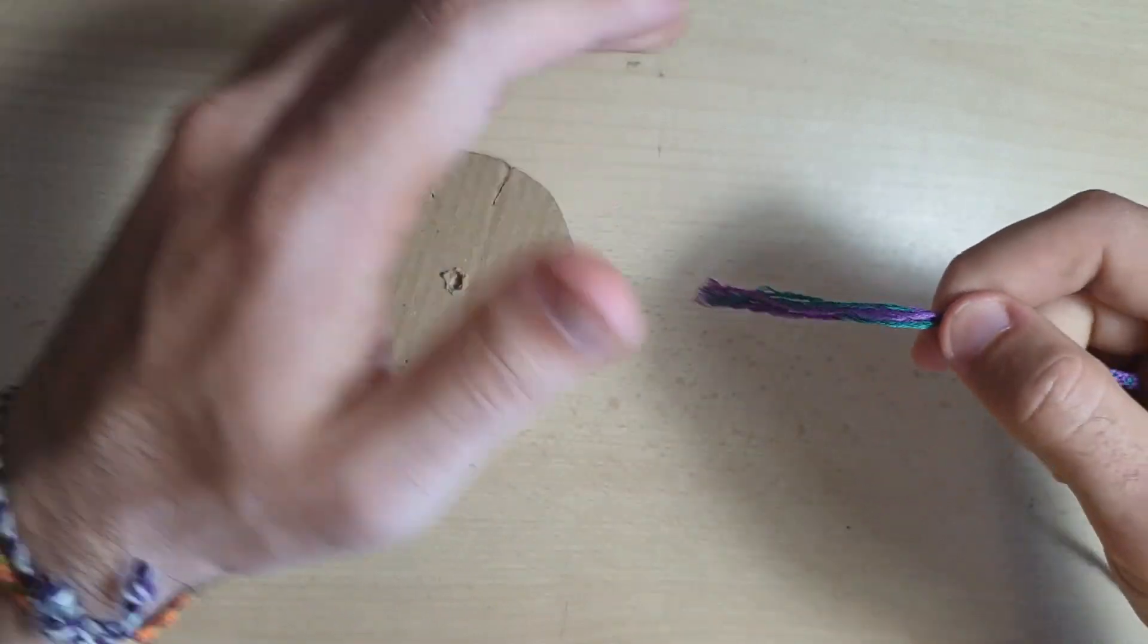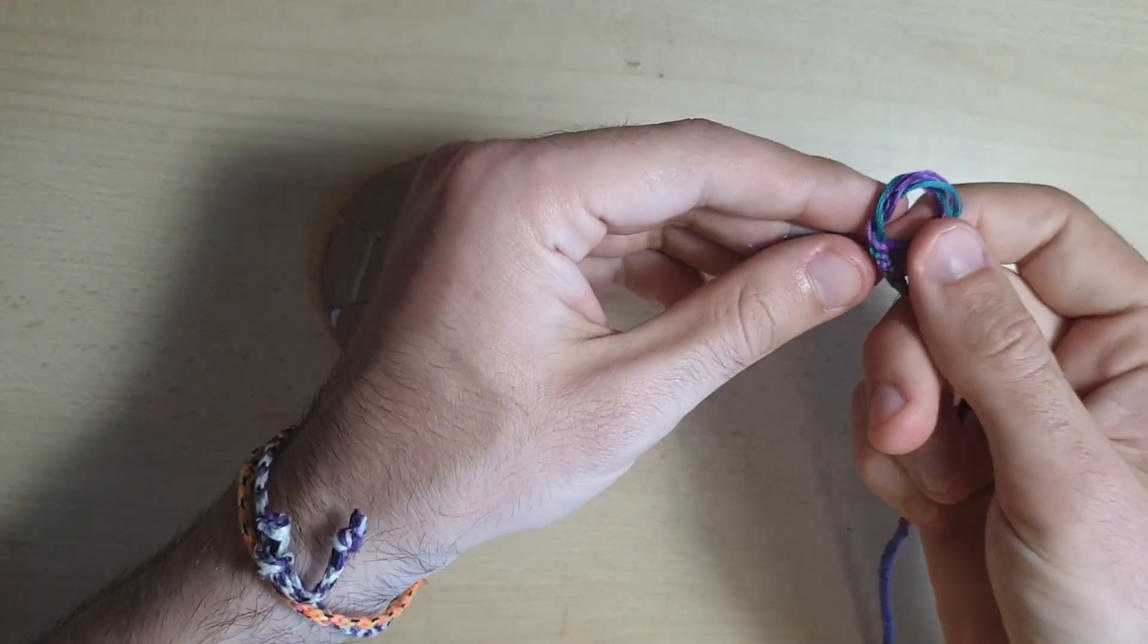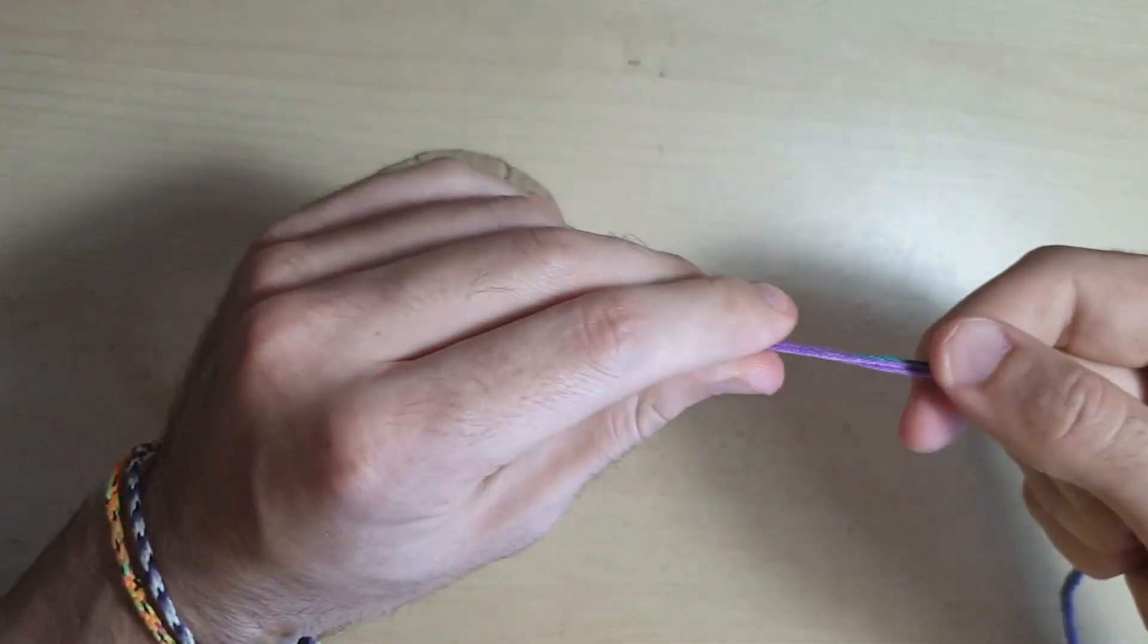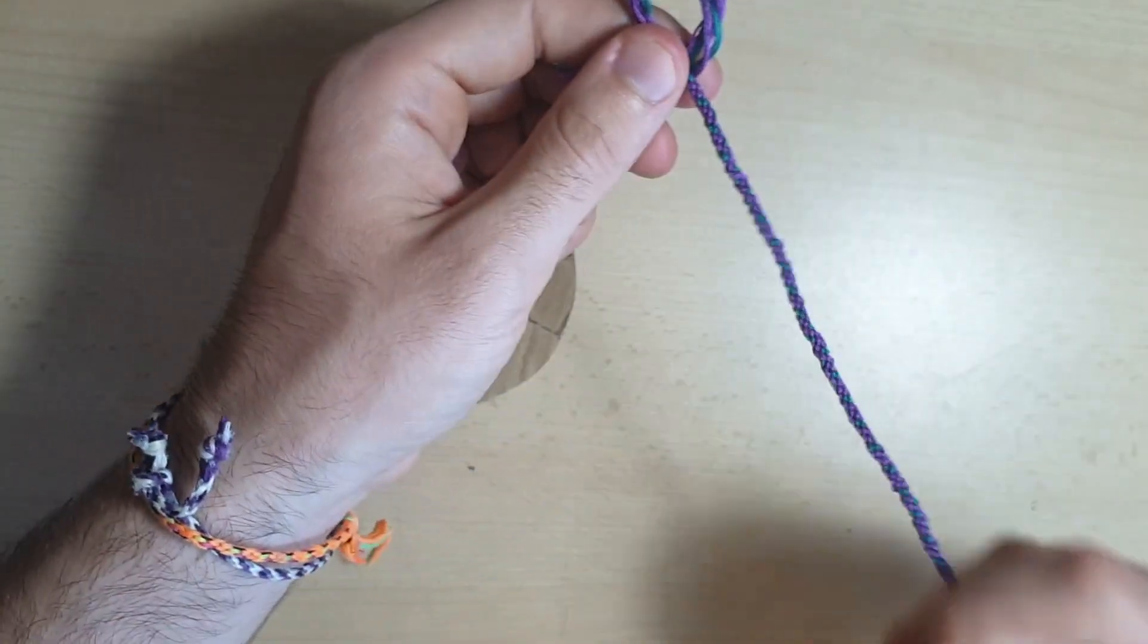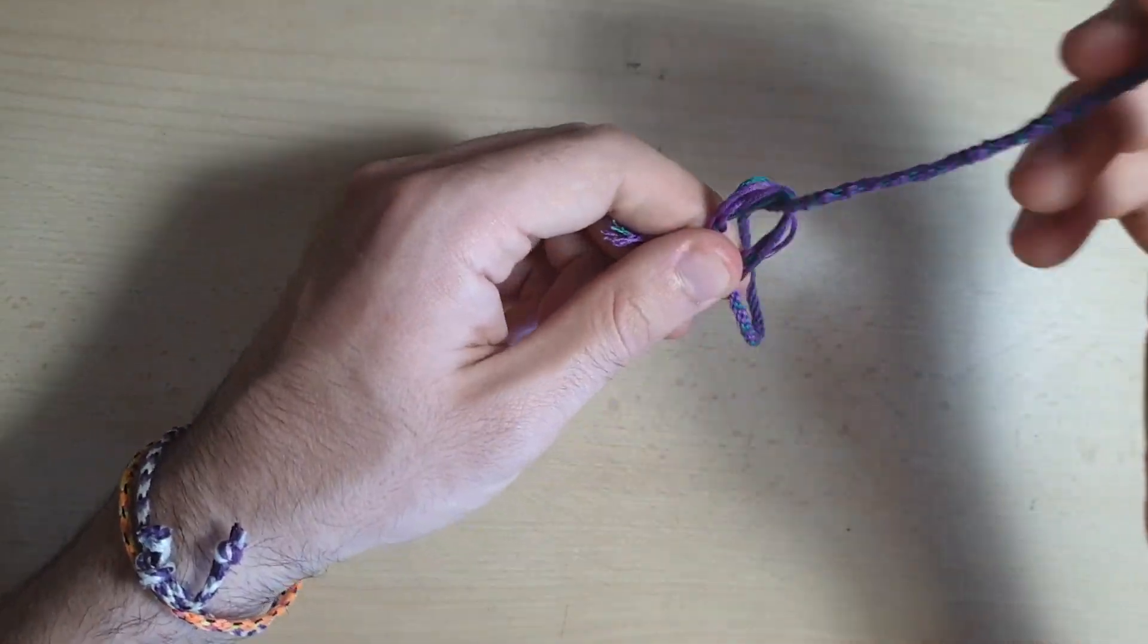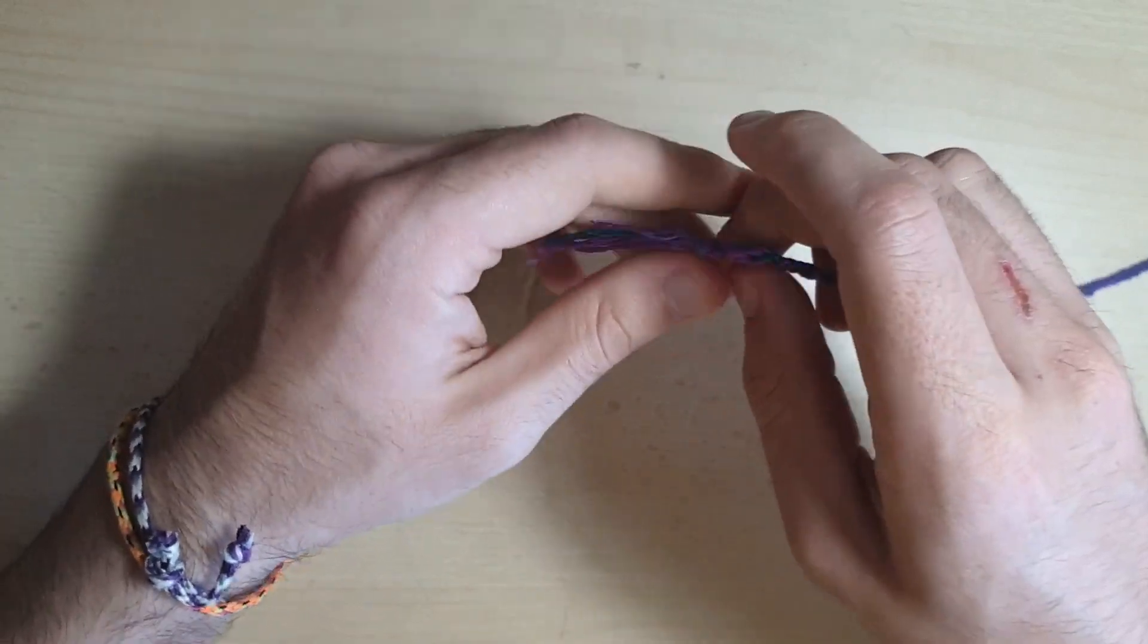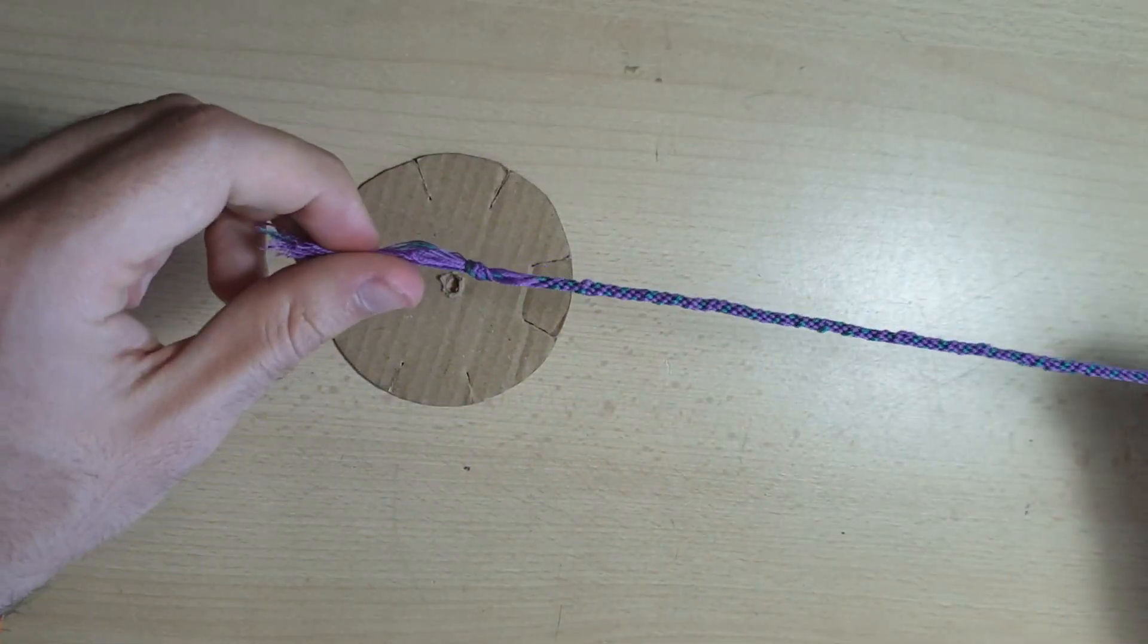And you do the same knot you did at the very start. So you make a loop. You take one end, it's often easier to do the furthest end, and you thread it through, and then you get it nice and tight here, like that.